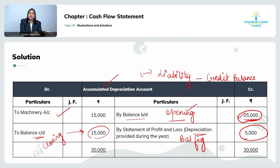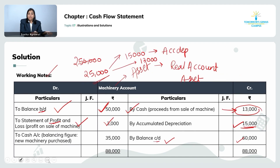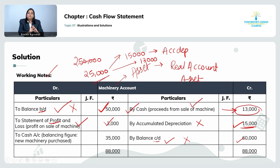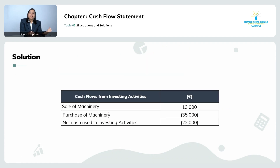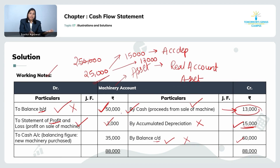Under the machinery account, we identify what goes to investing activity. The accumulated depreciation opening and closing balances don't require any entry in the cash flow statement. When we sell the machinery, cash comes into the business — there is a cash inflow. So we add 13,000 as cash inflow from the sale of machinery under investing activity.